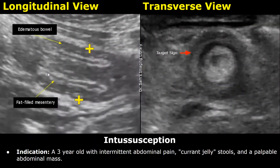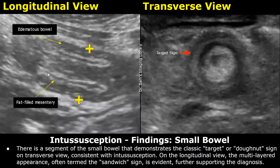This is a report for intussusception. Indication: a three-year-old with intermittent abdominal pain, current jelly stools, and a palpable abdominal mass. Findings: there is a segment of the small bowel that demonstrates the classic target or donut sign on transverse view, consistent with intussusception. On the longitudinal view, the multi-layered appearance, often termed the sandwich sign, is evident, further supporting the diagnosis.